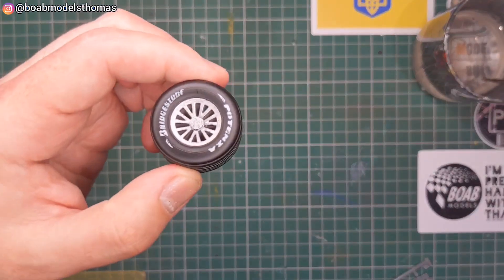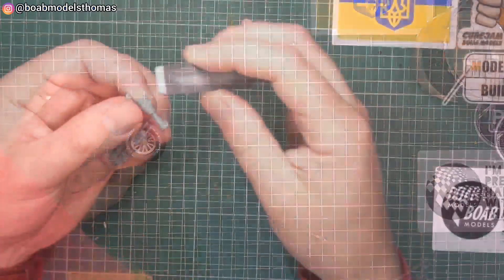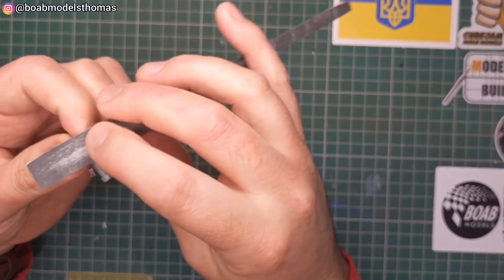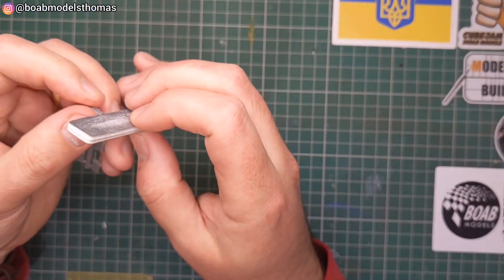There we are. Now when it came to the accessories, it was important to sand away any burrs or mold seams on the wheel gun.